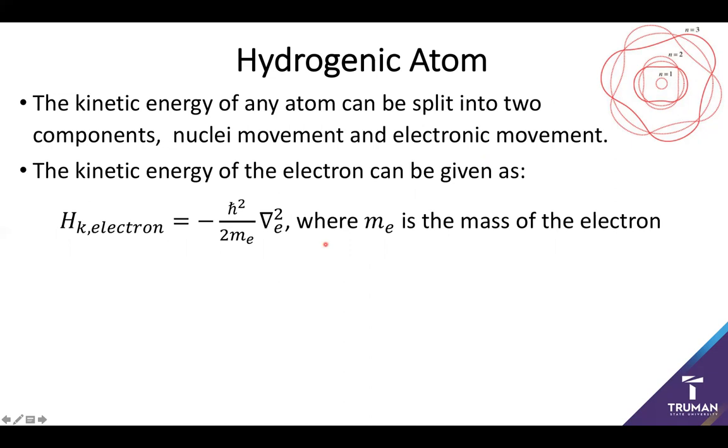It's based on the negative of ℏ² times twice the mass of the electron times the Laplacian of the electronic position. This is the second derivative with respect to all coordinates of the electronic position. This is our classic second derivative with regards to the radii, but also with regards to θ and φ. We've got this pesky issue of a full unrestricted radial movement, which isn't something we've quite had to deal with before.